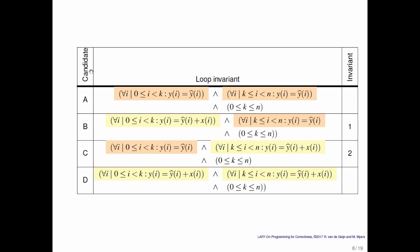Candidate B says that the first k entries have been updated with the final result. That sounds like progress. And the rest of the entries have not yet been updated. That seems like a reasonable loop invariant.